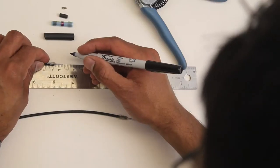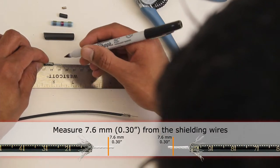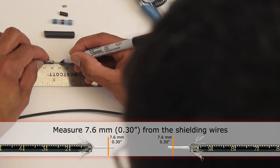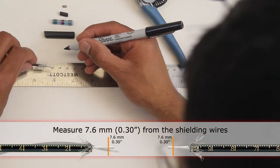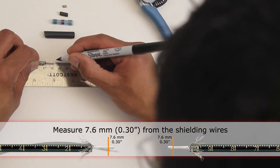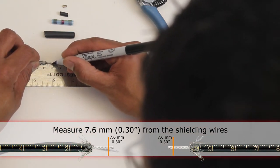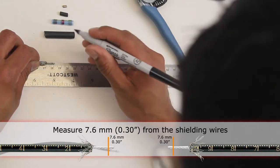We'll mark both cables about 7.6 millimeters from the edge where we stripped the jacket. So about here. Same with the second cable. 7.6 millimeters.